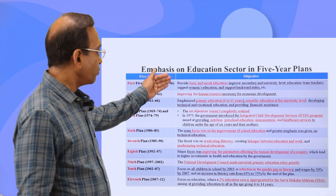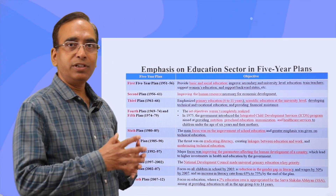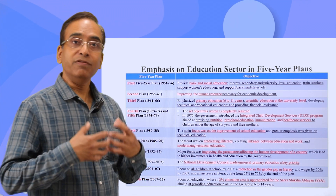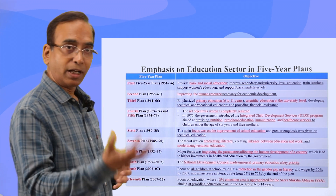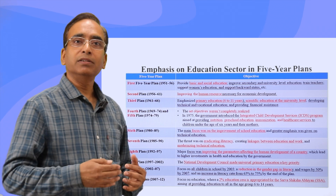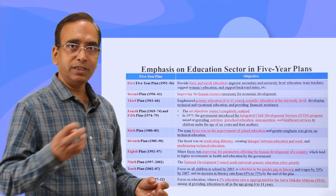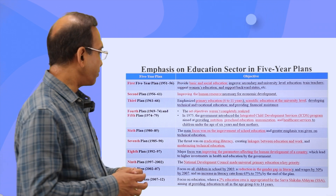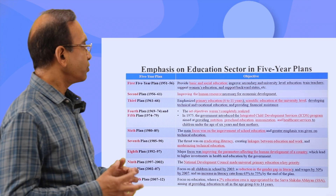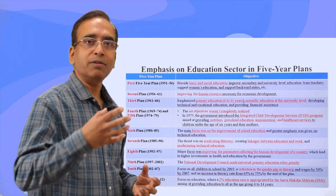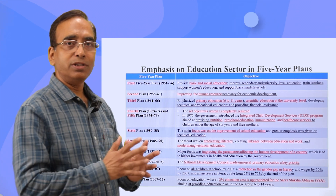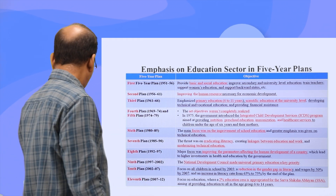In this slide, we talk about five-year plans and how India's education policy changed. Throughout the decades, India initially focused on basic education, then higher education, then human capital development, then infrastructure development, and then global connectivity with the education system. Interestingly, other policies were also integrated with education policies — for example, ICDS, the Integrated Child Development Scheme — connecting nutrition and preschool education.